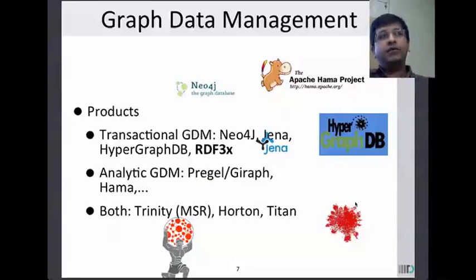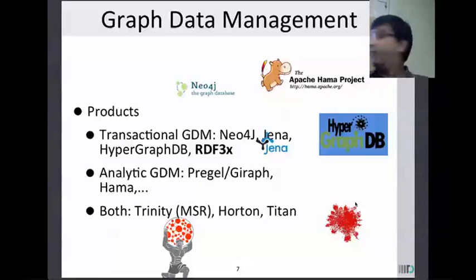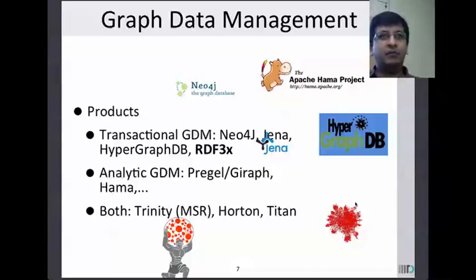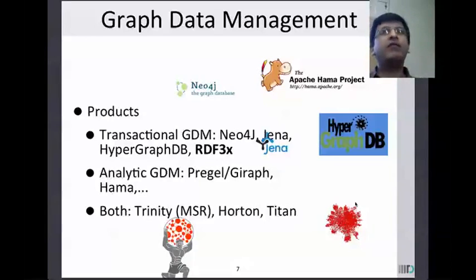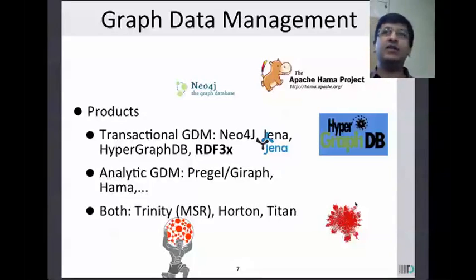Another thing many of these scalable graph data management solutions tried — except one which is in bold — is that since graphs are really complicated beasts with very diverse kinds of relationships, and RAM is getting cheaper, let us assume we can distribute the graph over many machines, each with GBs of RAM, and just put the entire database completely in memory.